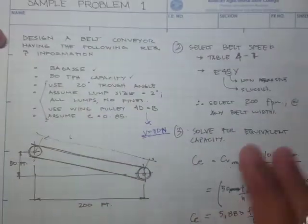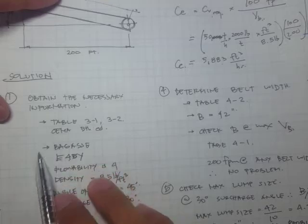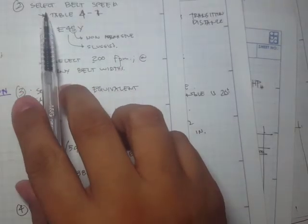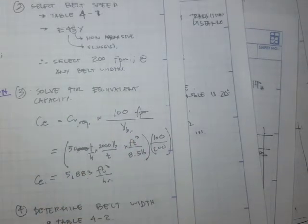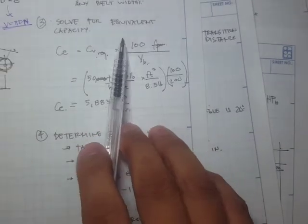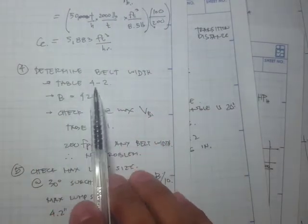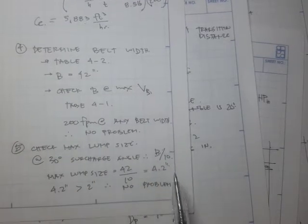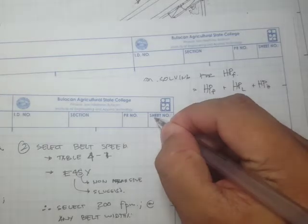Let's review our procedures. First, we obtained the necessary information from the corresponding tables: material code, flowability, and surcharge angle. Then we selected the belt speed and found 200 feet per minute as the maximum belt speed. After that, we solved for the equivalent capacity and entered Table 4-2 to obtain the belt width of 42 inches, then checked for lump size.